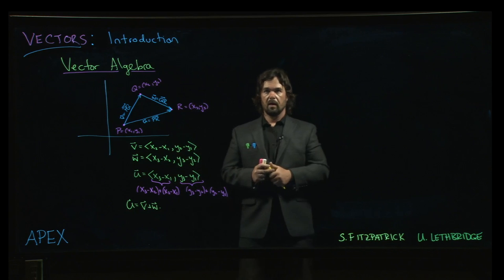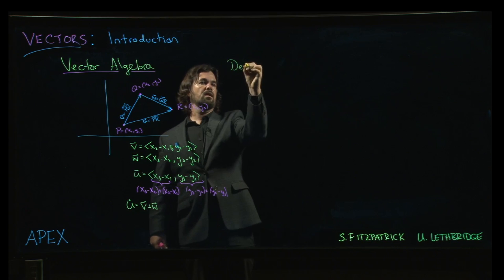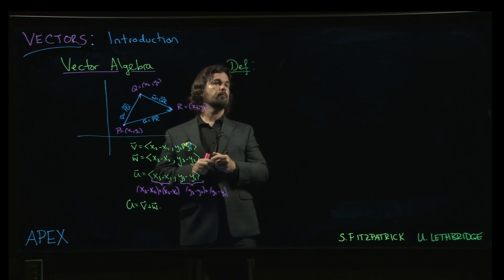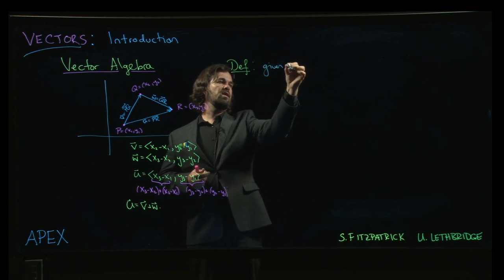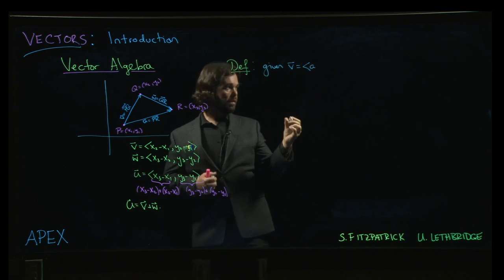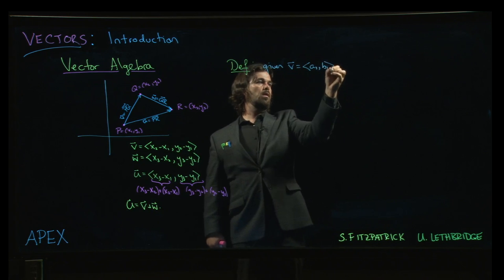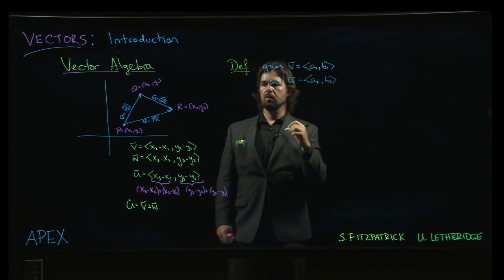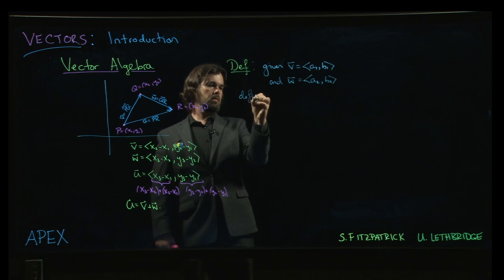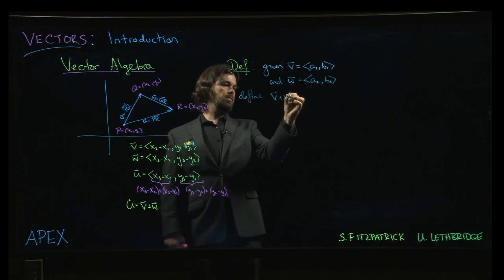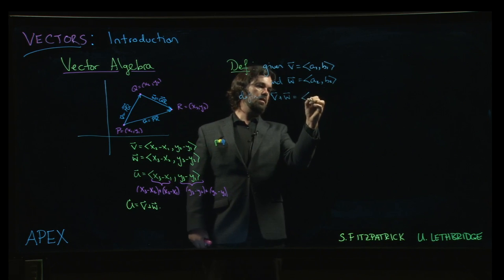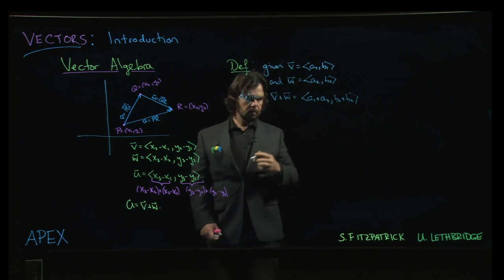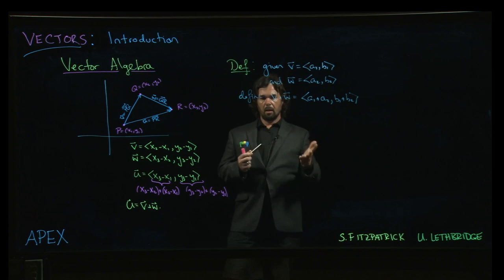You can do that. And so the definition that you would make would look like this. Given the vector V equal to a1, b1 and W equal to the vector a2, b2, we can define V plus W to be a1 plus a2 and then b1 plus b2. We can add them together like that.